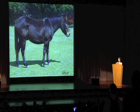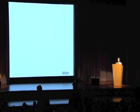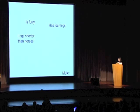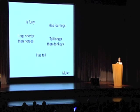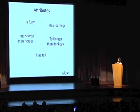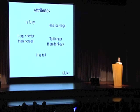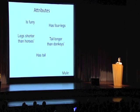It seems like once the machine already knows donkeys and horses, I should be able to teach it about mules just by describing them as being furry, having four legs that are shorter than horses, having a tail but that's longer than a donkey's tail. Attributes let us do exactly this. They are mid-level concepts that are shared across categories. Because they are visual concepts, they can be detected by machines, and because they are human interpretable, humans can use them to describe things.